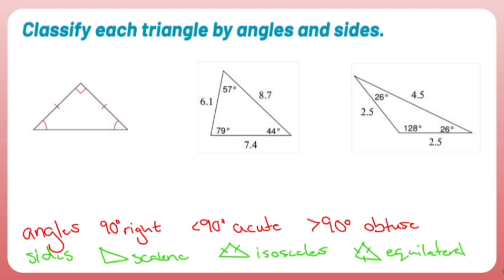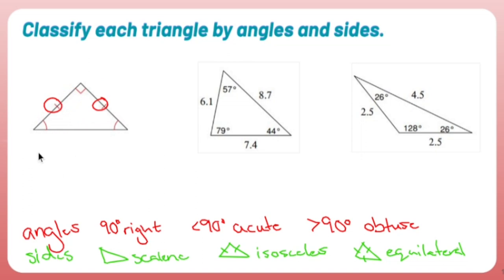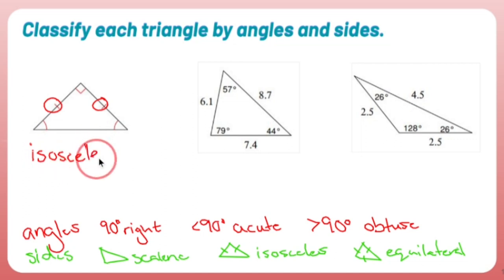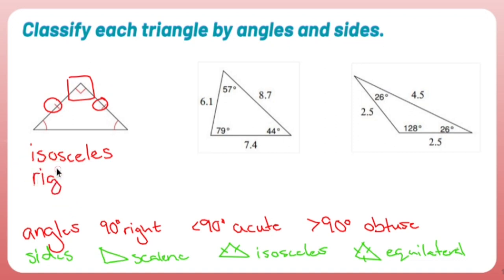So those are my three things. Let's take a look at what we have here. This first triangle has two sides that are the same, which tells me that it's isosceles. And one of my angles is a 90 degree angle, so it's isosceles and right.